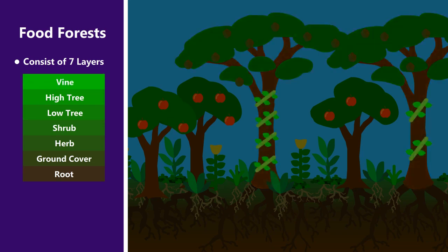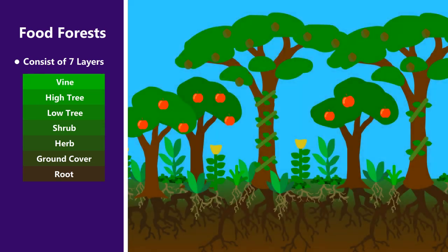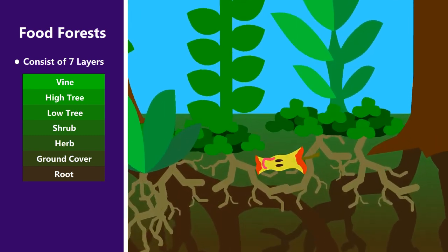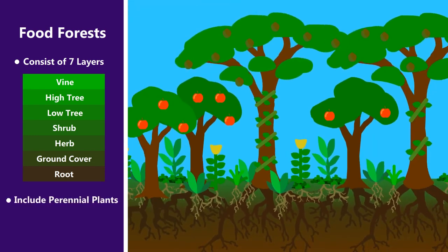Every one of these layers either produces some sort of food or medicine or is in some way helpful to the system as a whole. The plants are mostly perennials and include as many native species as possible.